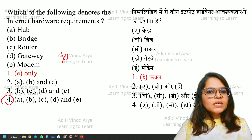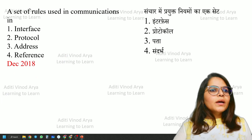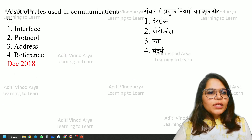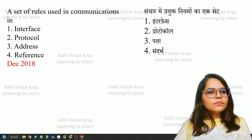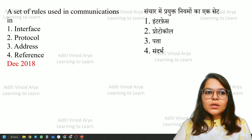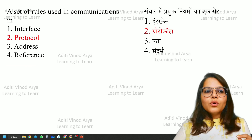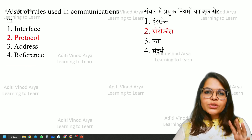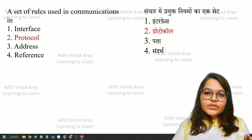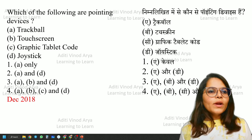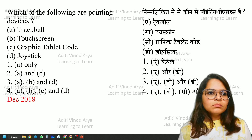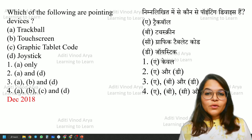A set of rules used in communications — this is a very easy question if you have read ICT. These are called protocols. Protocols are rules and regulations through which communication takes place between two systems, so protocol is the right answer.